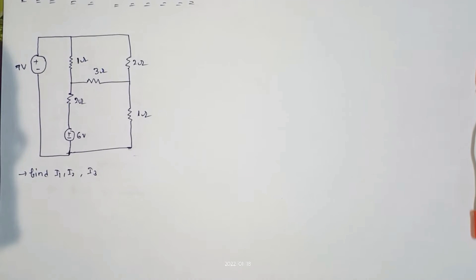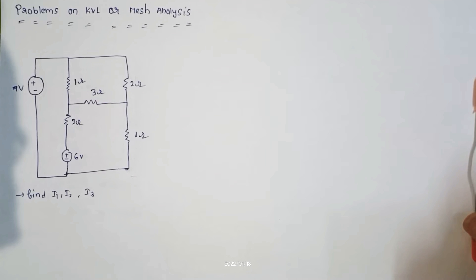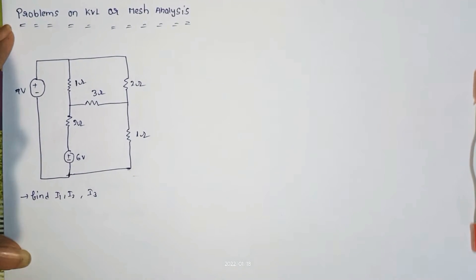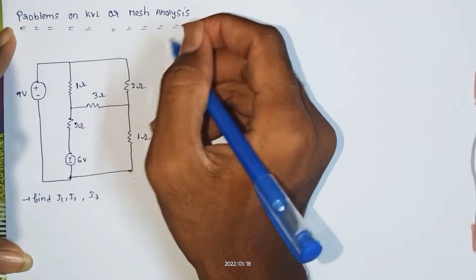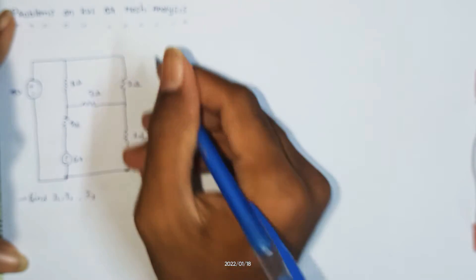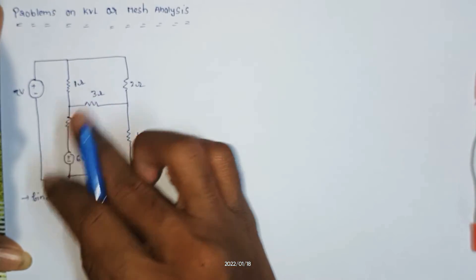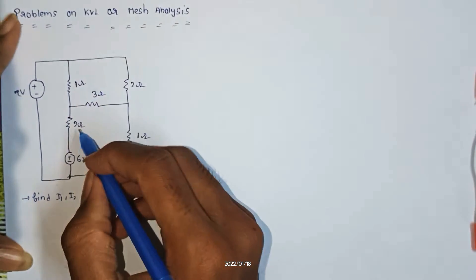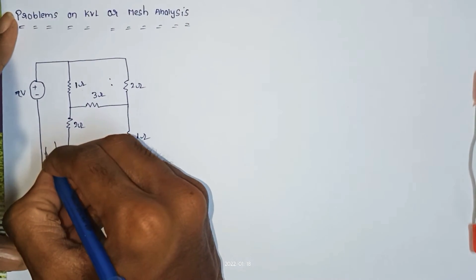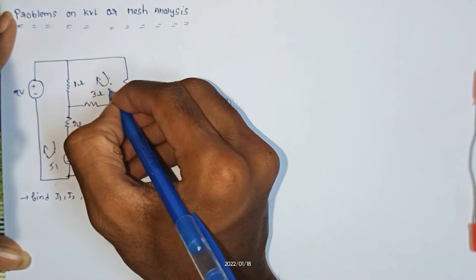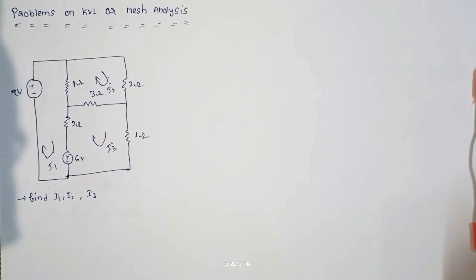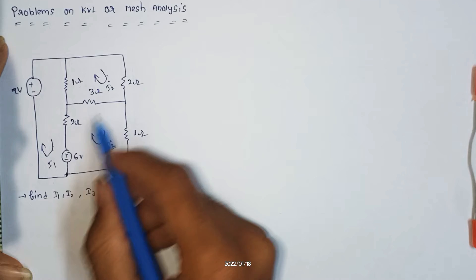Hi friends, welcome to Ganesh Tadita's YouTube channel. Today we will discuss problems on KVL or mesh analysis. Here we can see a circuit, so find I1, I2, I3. The first step is to identify how many loops there are. Here we can identify three loops: I1, I2, I3, with directions in clockwise direction.